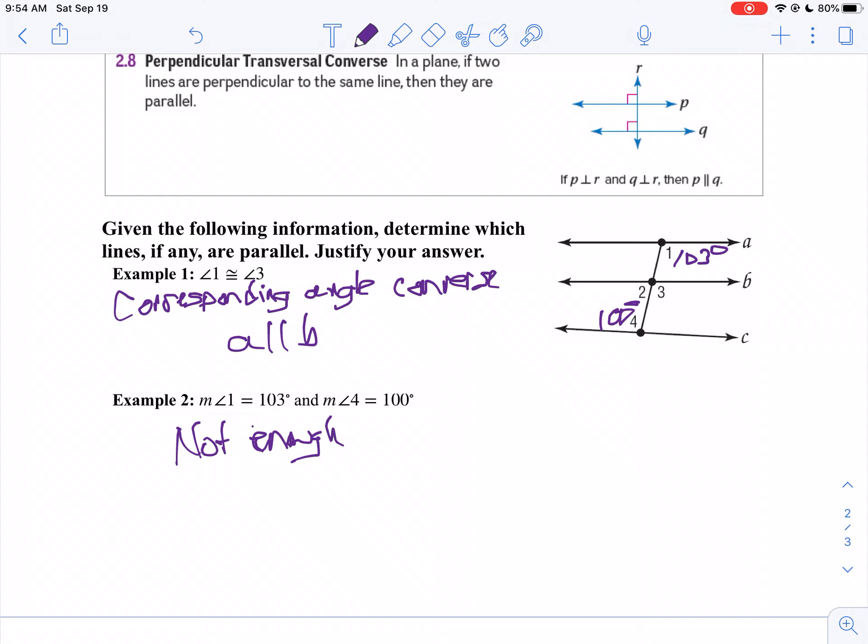A is not parallel to C. We know that for sure, and we need more information to include line B. So we're just going to say not enough information, or none, or not parallel. That's all we got to do on that one.